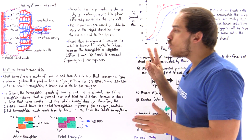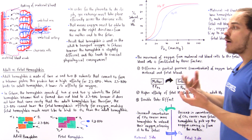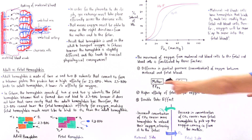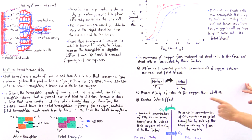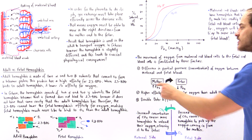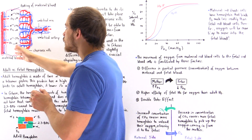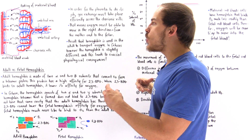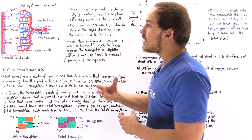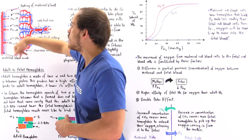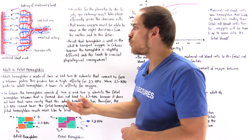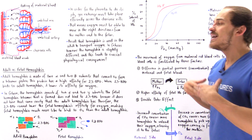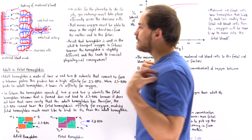Aside from hemoglobin affinity, there are two other factors that facilitate placental gas exchange. The movement of oxygen from mother to fetus is facilitated by: first, the higher affinity of fetal hemoglobin for oxygen; and second, the fact that inside the mother's blood there is a higher concentration of oxygen than inside the fetal capillaries. Because of this concentration difference, oxygen naturally moves down its concentration and pressure gradient from mother to fetus.